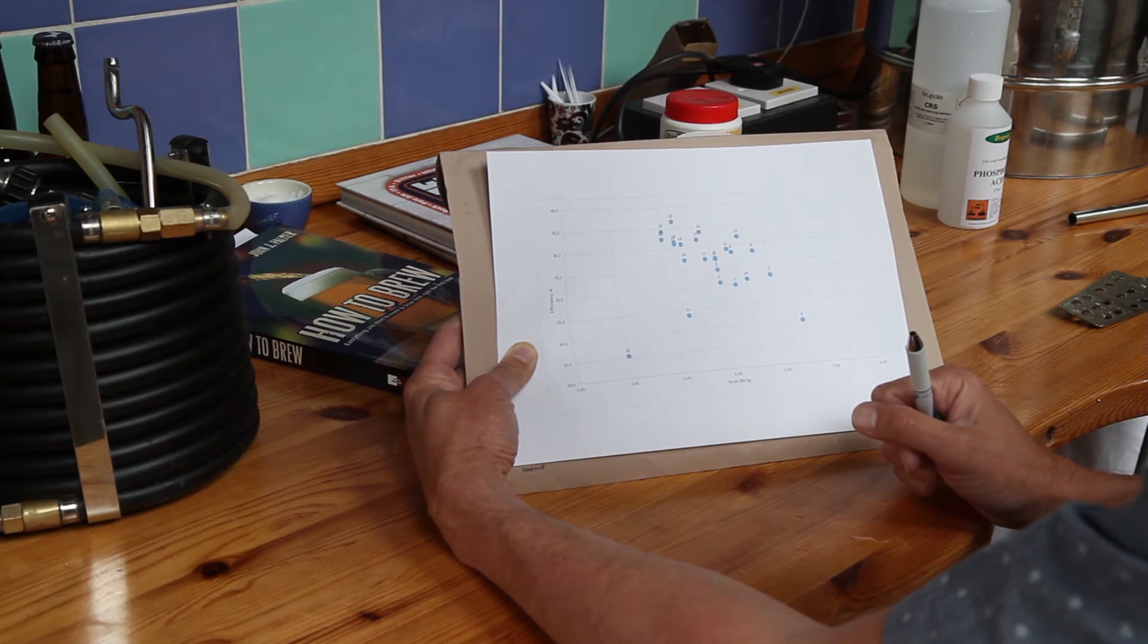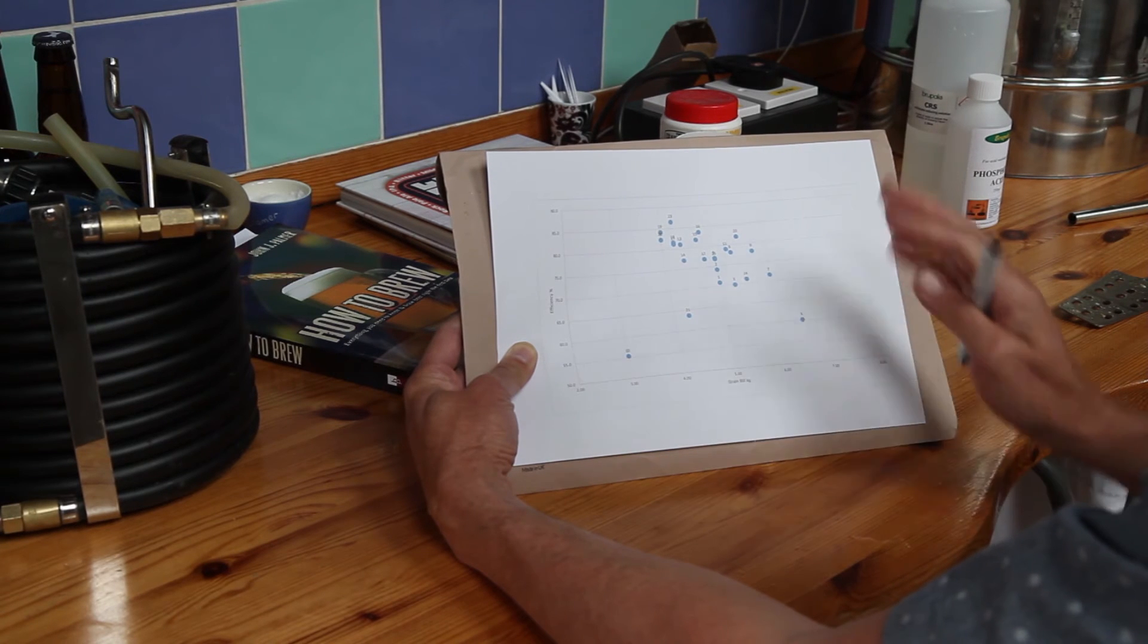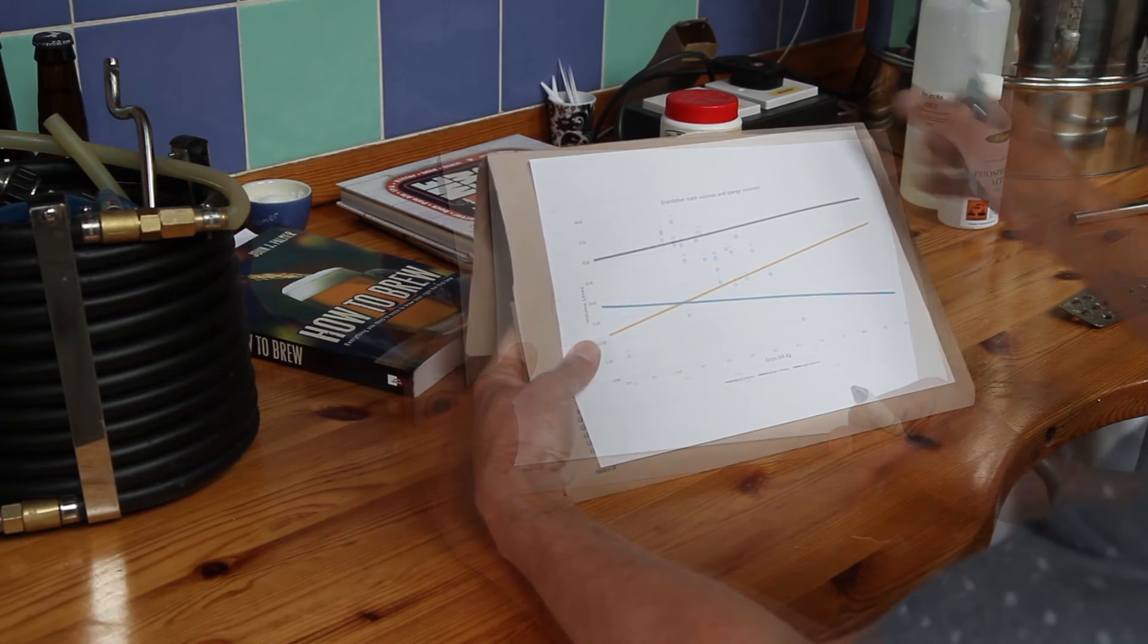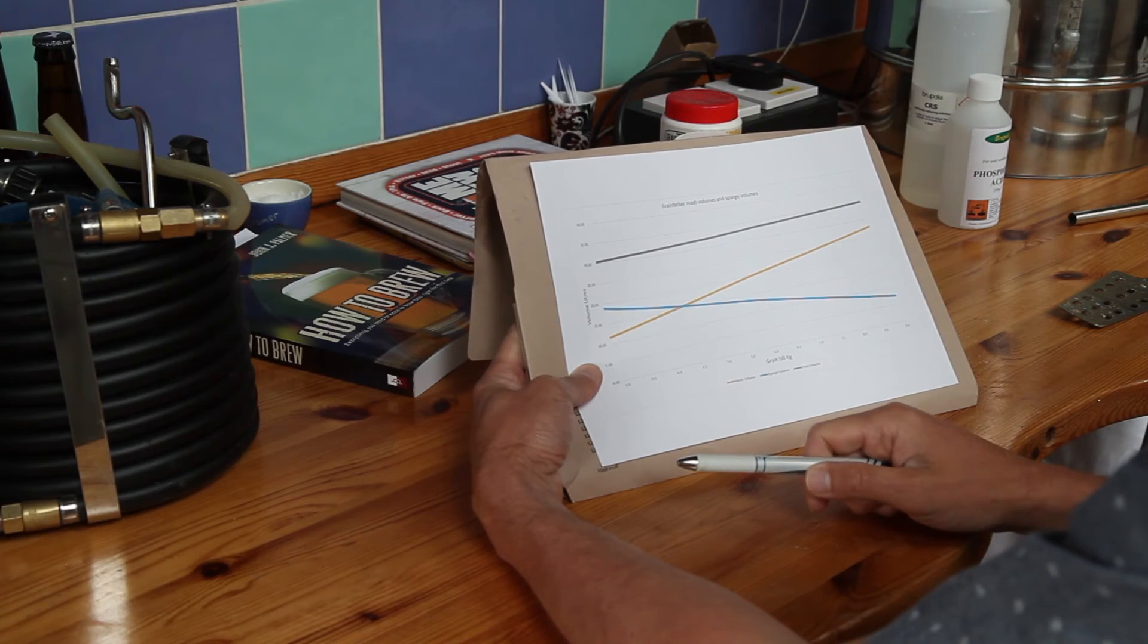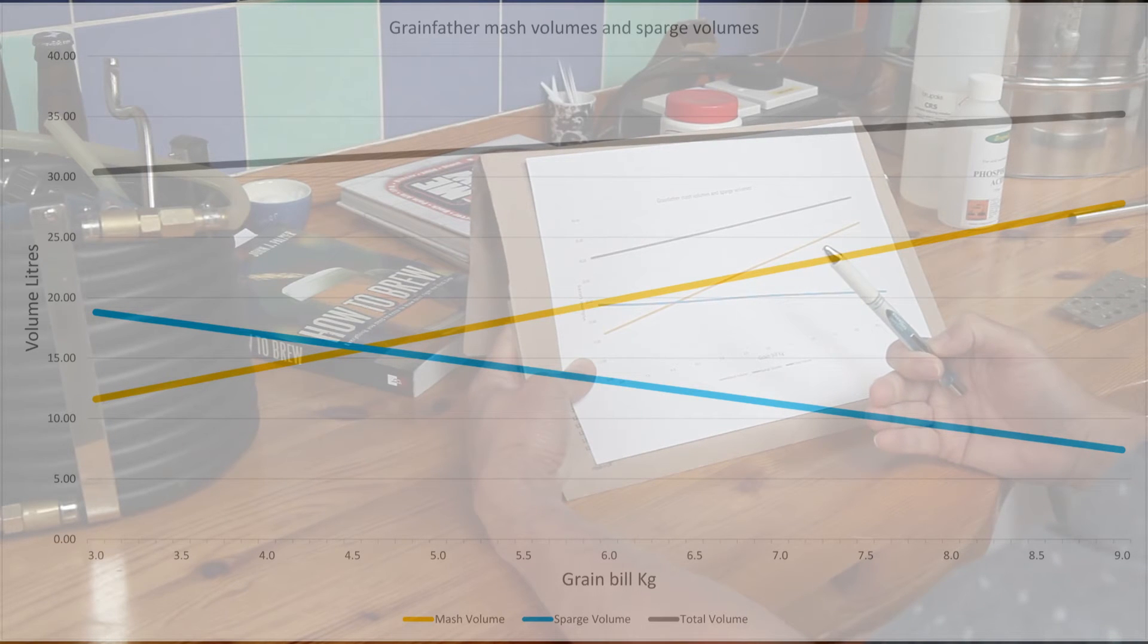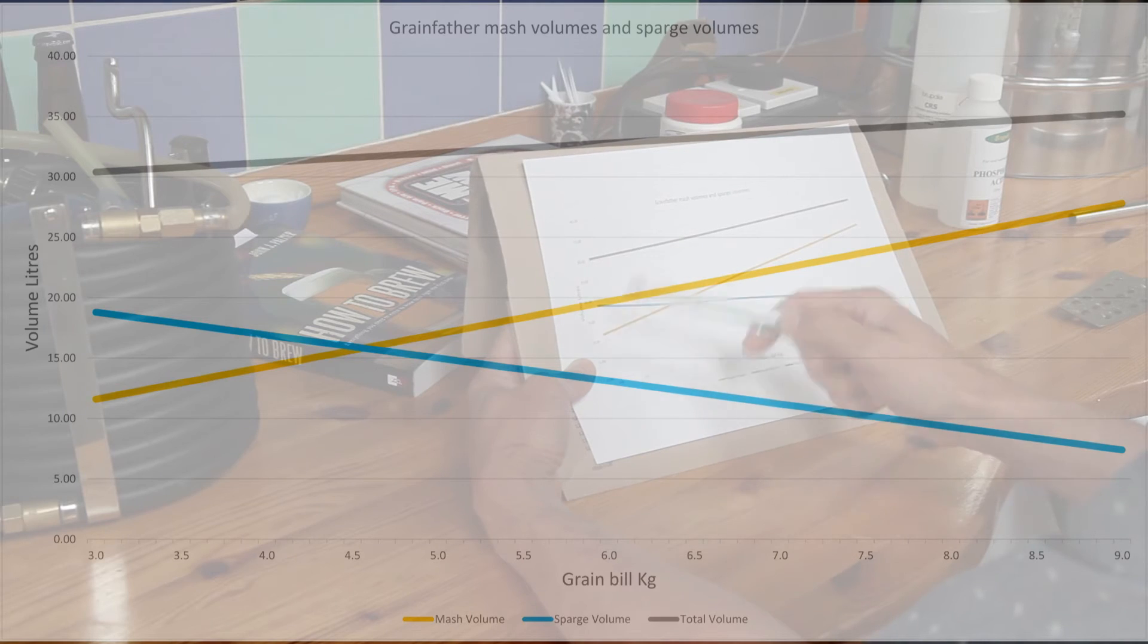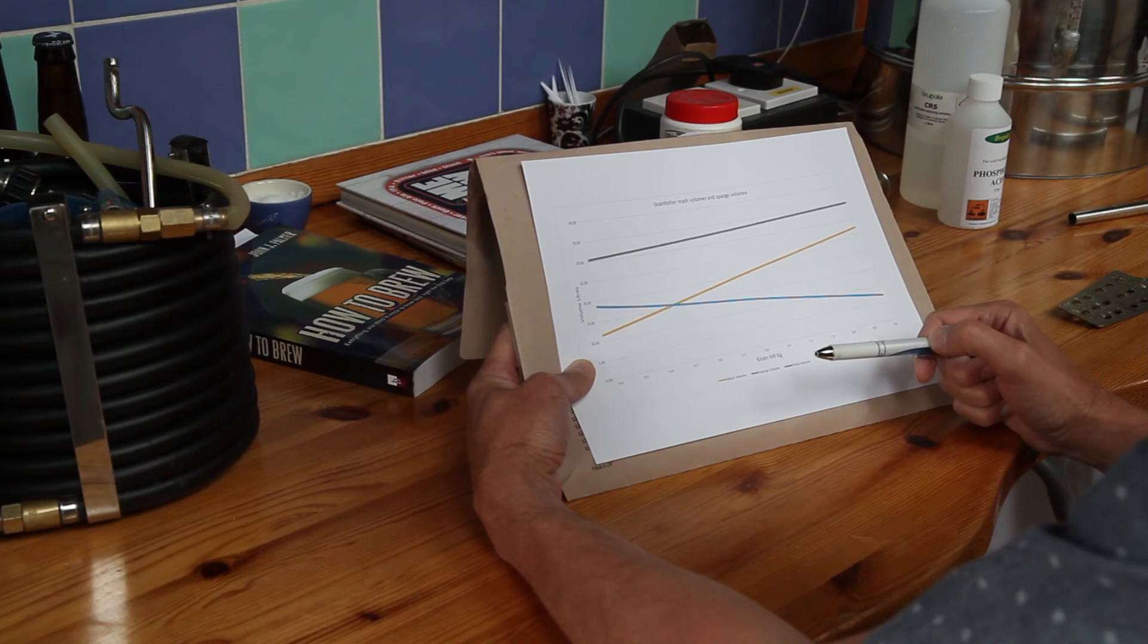There's another effect as well, and that is the effect of the calculation that Grainfather does around mash and sparge volumes. This is a plot of the water volumes that are going on in your Grainfather brew. We've got the grain bill going up here and the water volume here. You can see the mash volume goes up as the grain bill goes up. The Grainfather is working within three constraints. One, what final volume do you want in your brew? Two, how much water is needed to get the right consistency for the mash? And three, how much water is going to be absorbed by the grain? This line here is the total amount of water that you'll be using in your brewing. Even though we're ending up with the same volume, this is based on 23 litre brews, the volume of water that you use goes up, and that's reflecting the higher grain bill and the amount of water that will be left behind in the grain.